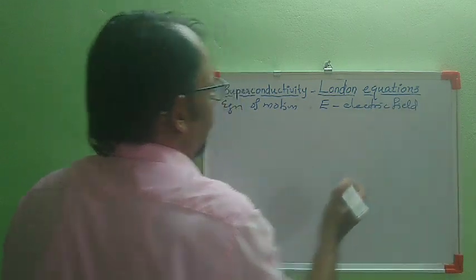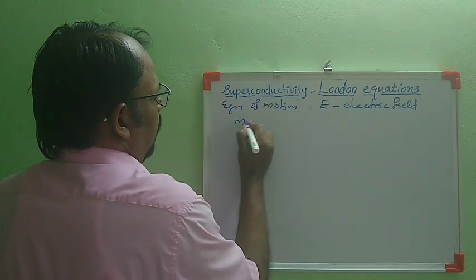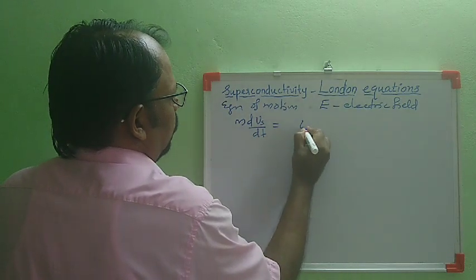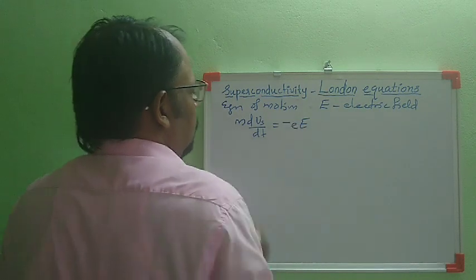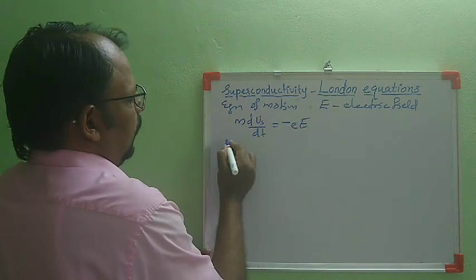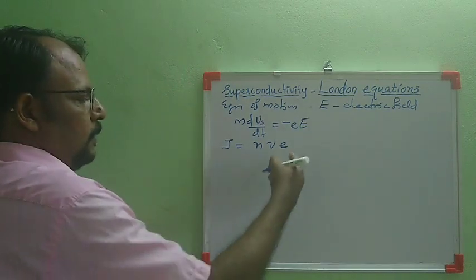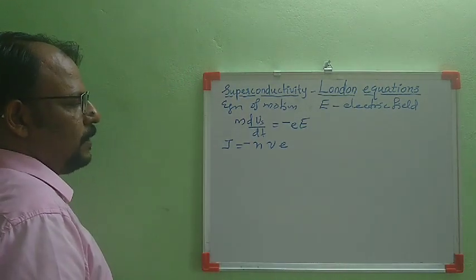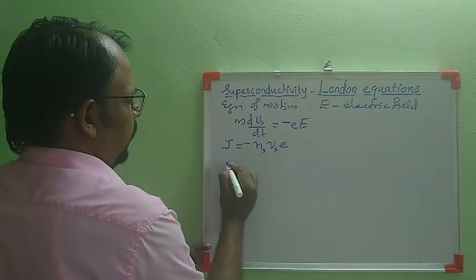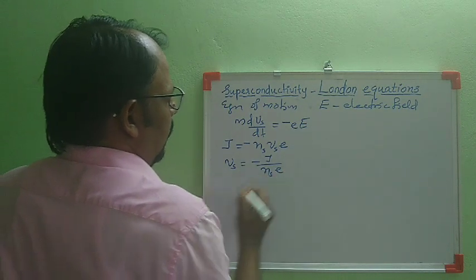If an electric field is applied across the conductor, the equation of motion of super electrons can be written as m·dVs/dt = eE. Since the electron has minus charge, we write m·dVs/dt = -eE. The current density is given by J = Nve. Since the electron has negative charge, we write J = -Nve, and for super electrons, J = -NsVse. From that, Vs = -J/(Nse).